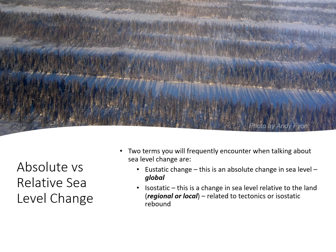Relative sea level change is usually caused by isostatic rebound or local tectonic changes. A nice example of isostatic rebound can be seen in the Hudson Bay lowlands. The trees show previous shorelines. During the last ice age, a massive body of ice covered Hudson Bay, which caused the earth's crust to be pushed down. As the ice melted and the weight was removed, the land slowly rebounded. Sea levels in Hudson Bay still appear to be falling, but they aren't — the surrounding land is slowly rising. With each incremental rise, a new shoreline is created as shown by these trees.